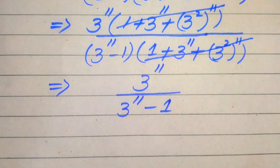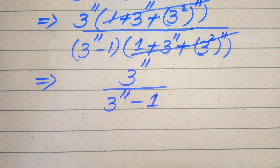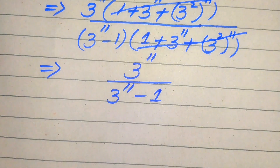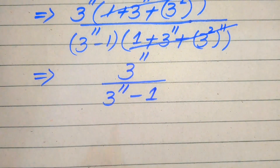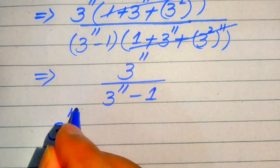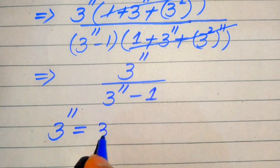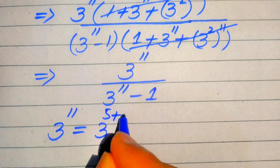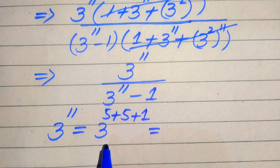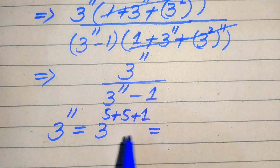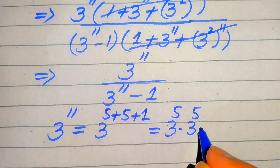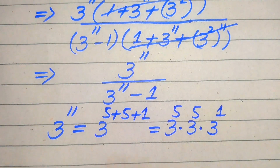In the next step we need to simplify this expression further. First, we find the value of 3 to the power of 11. We write 3 to the power of 11 as 3 to the power of 5 plus 5 plus 1, then apply the exponent law to break it as 3 to the power of 5 multiplied by 3 to the power of 5 multiplied by 3 to the power of 1.